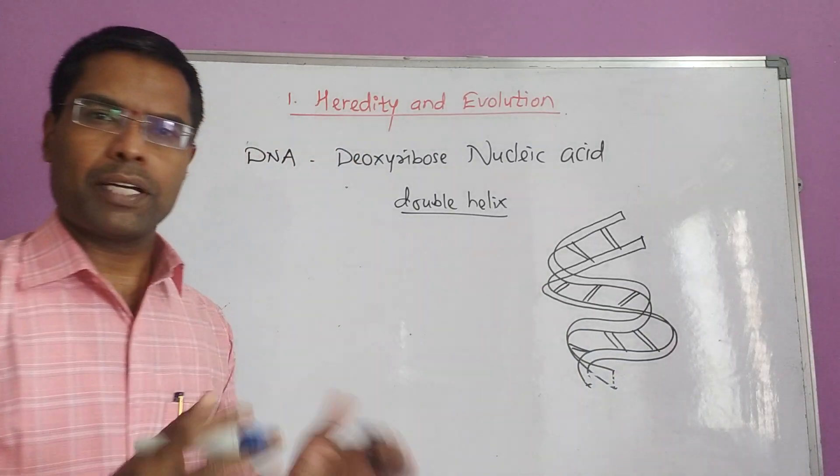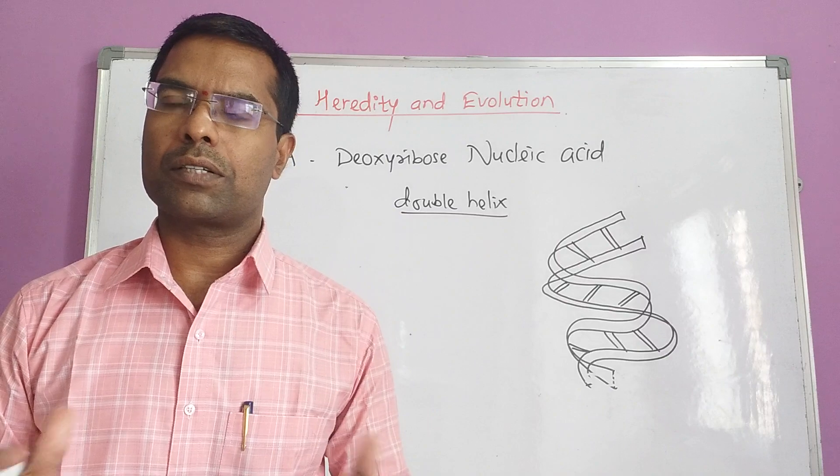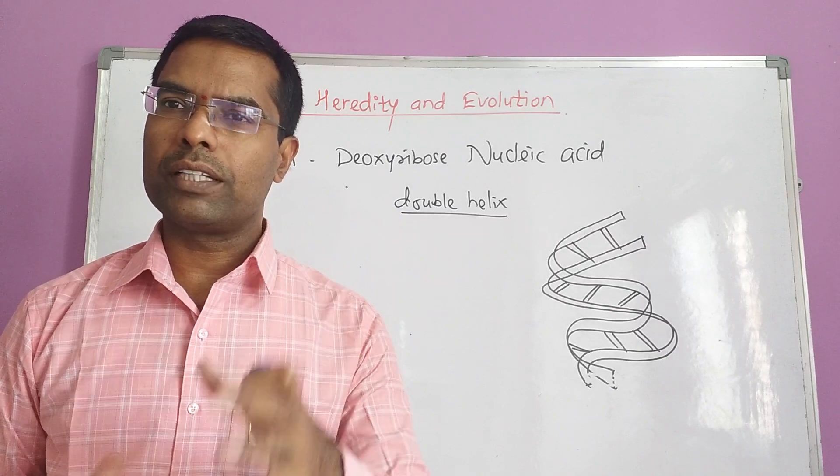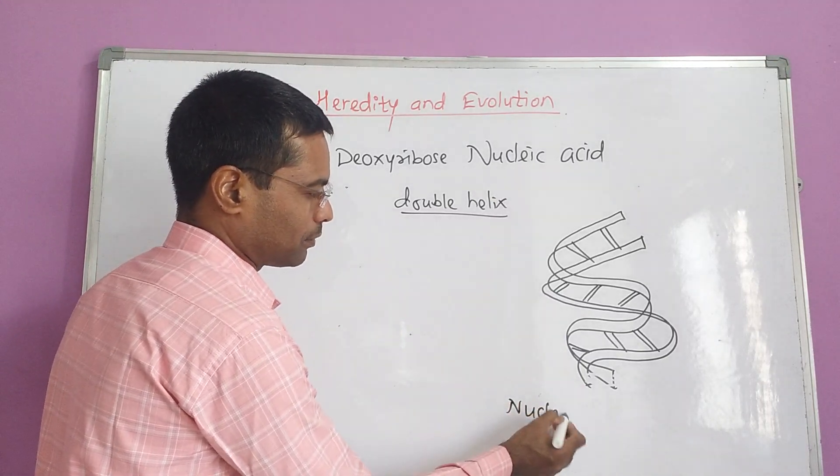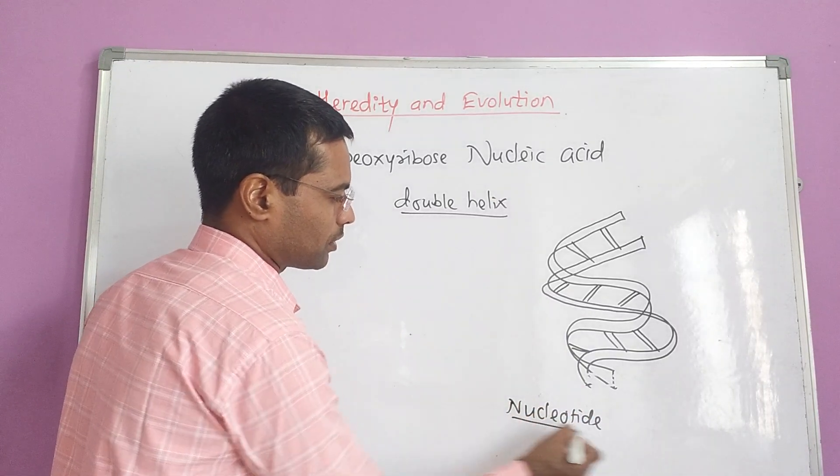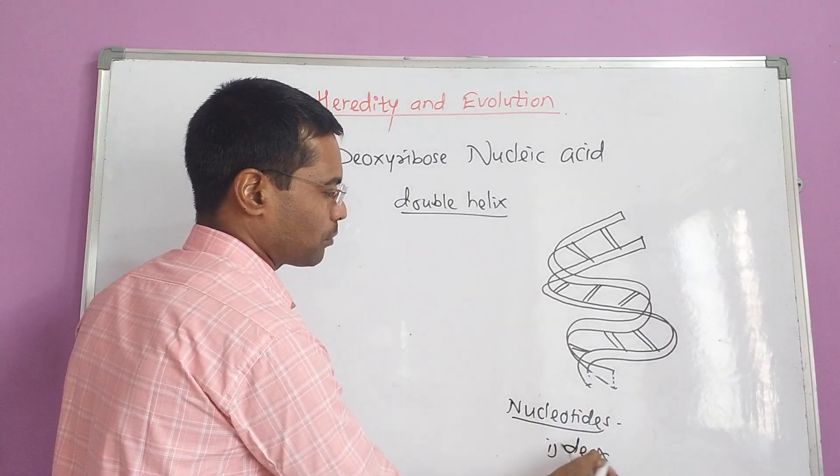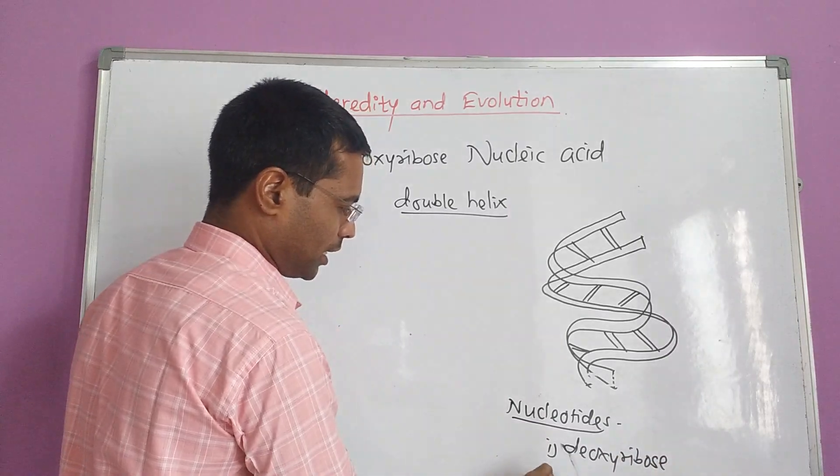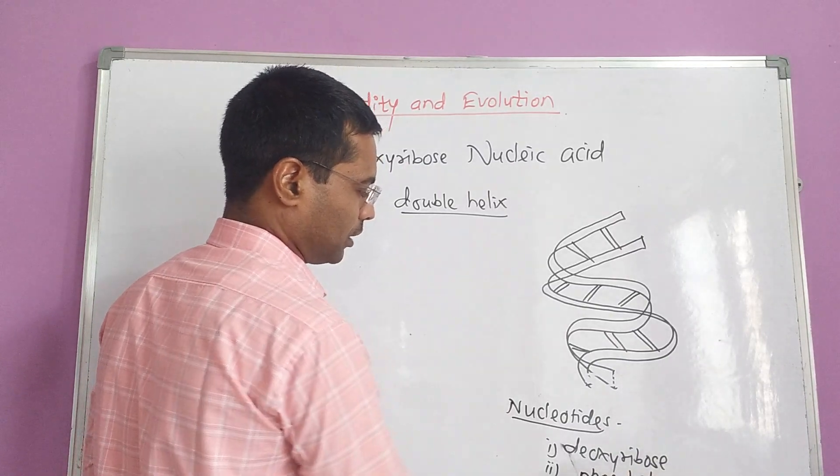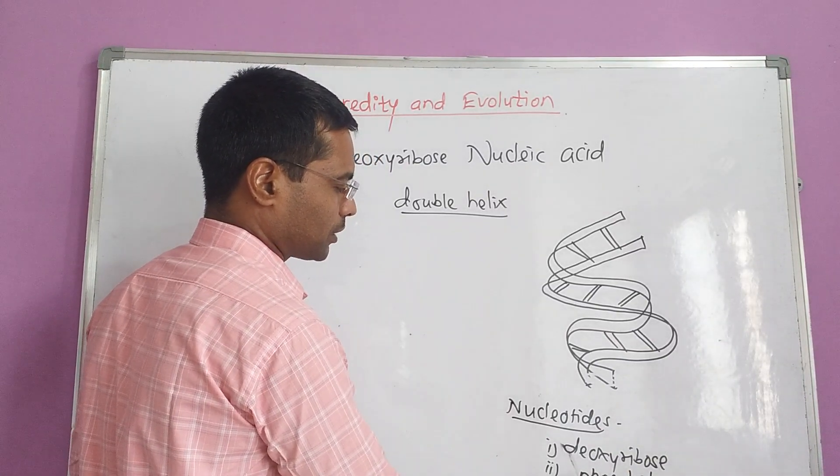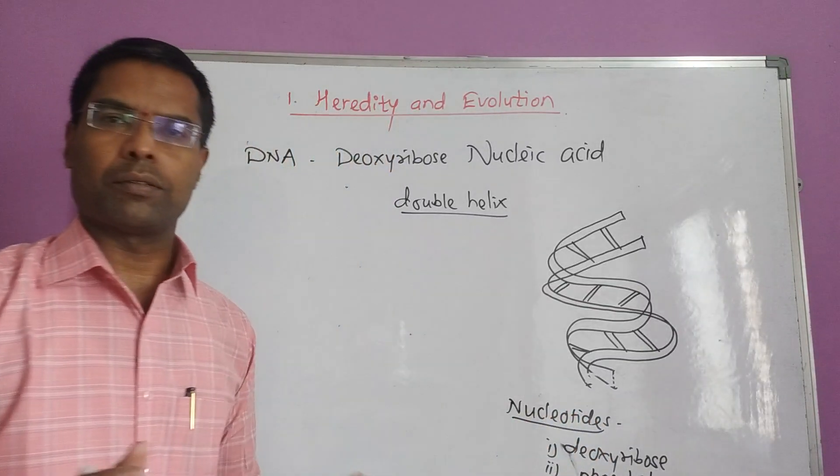But in detail, whenever we are discussing the structure of DNA, students, DNA is a polynucleotide. And a single nucleotide of this is made up of three structures. The first is the ribose or it is called as deoxyribose sugar. Second, that is the phosphate molecule or phosphate ion. And third is the nitrogen base. These are the three parts that make the single nucleotide.